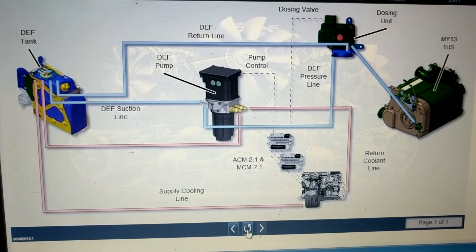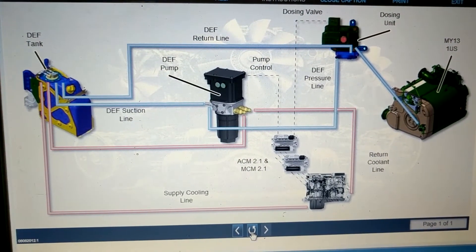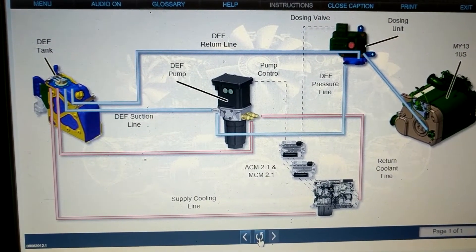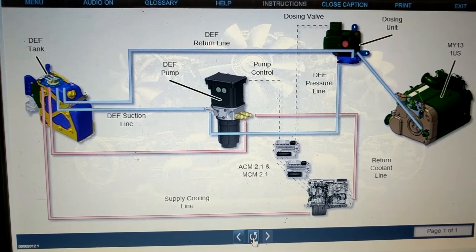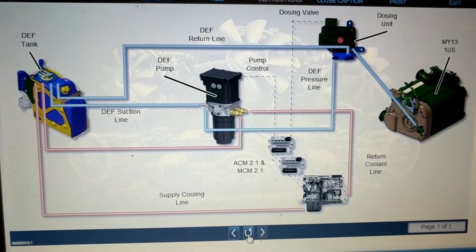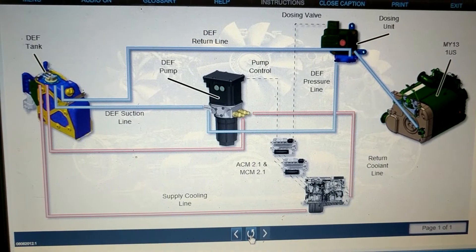The after-treatment system flow strategy changed significantly with the introduction of GHE-14 model engines. The air-assisted components of the EPA-10 system were completely removed and a new, liquid-only strategy for delivering DEF was implemented.